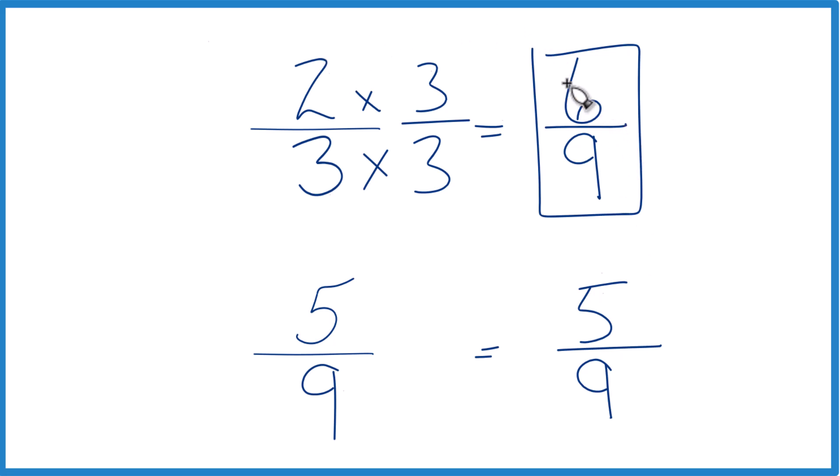Since these are equivalent here, that means that two-thirds, that's also going to be greater than five-ninths. This is Dr. B. Thanks for watchin'.